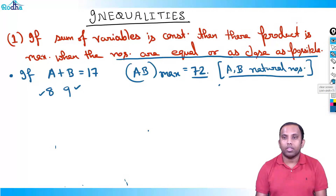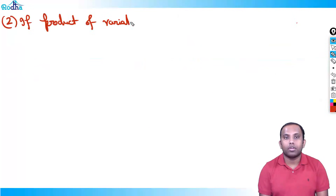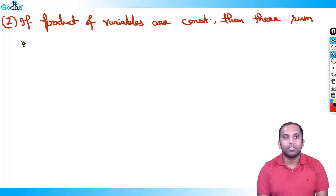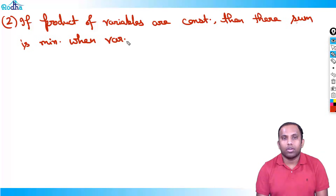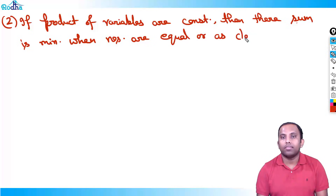The second funda is: if the product of variables is constant, then their sum is minimum when the numbers are equal or as close as possible. Sum constant gives product maximum; product constant gives sum minimum.